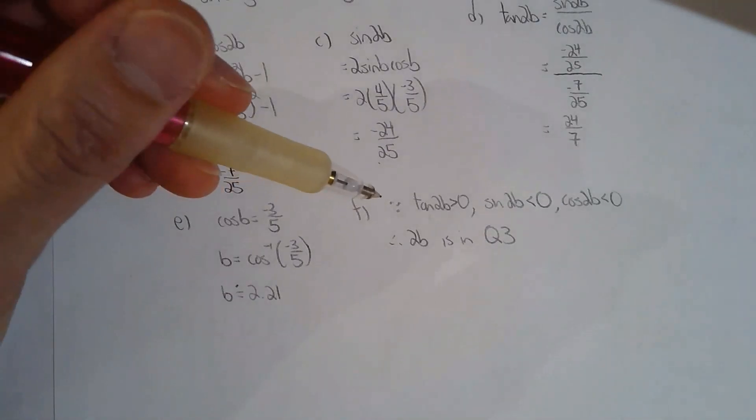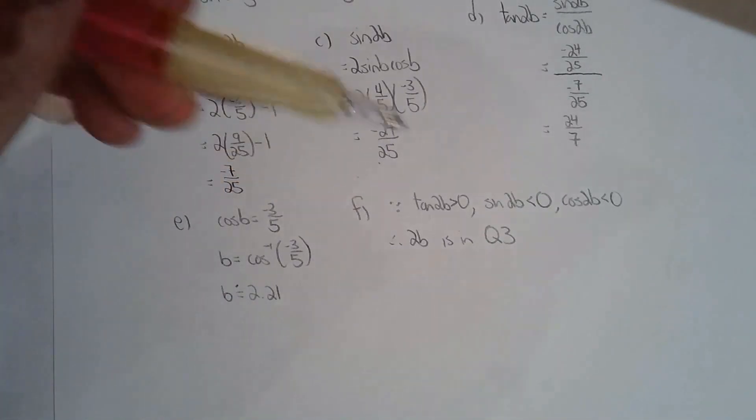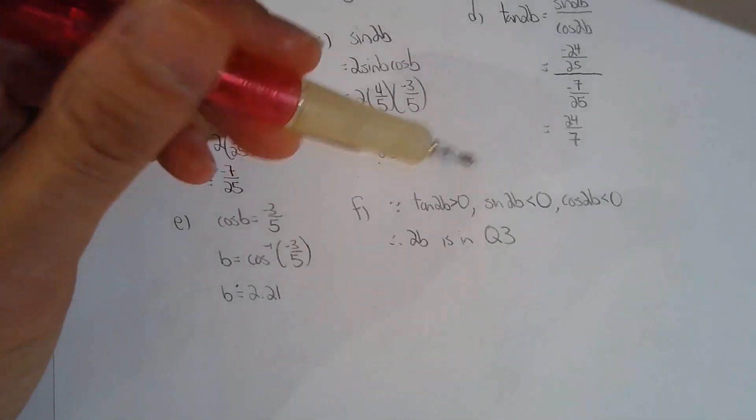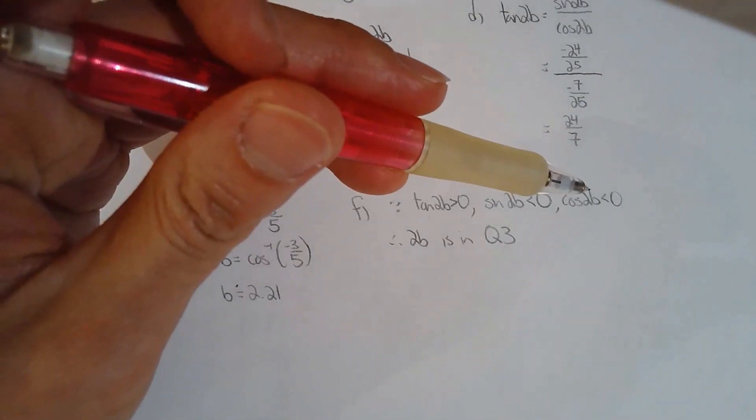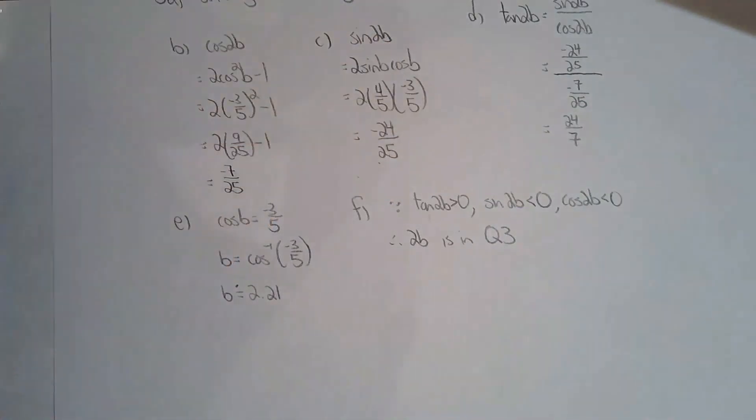The last one is asking me where is 2b located? Since tan 2b is positive, sine 2b is negative, cos 2b is negative as well, then 2b must be in quadrant three based on the CAST rule. Okay, so there's your first homework sheet for compound angle formulas.